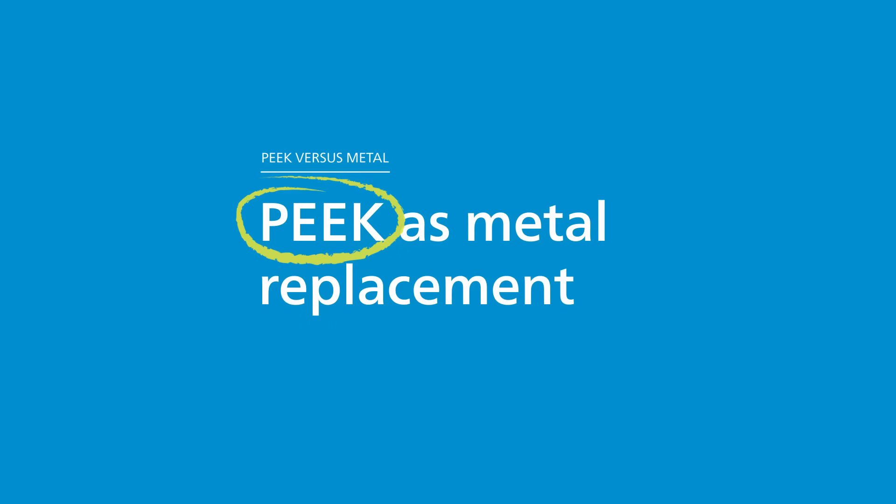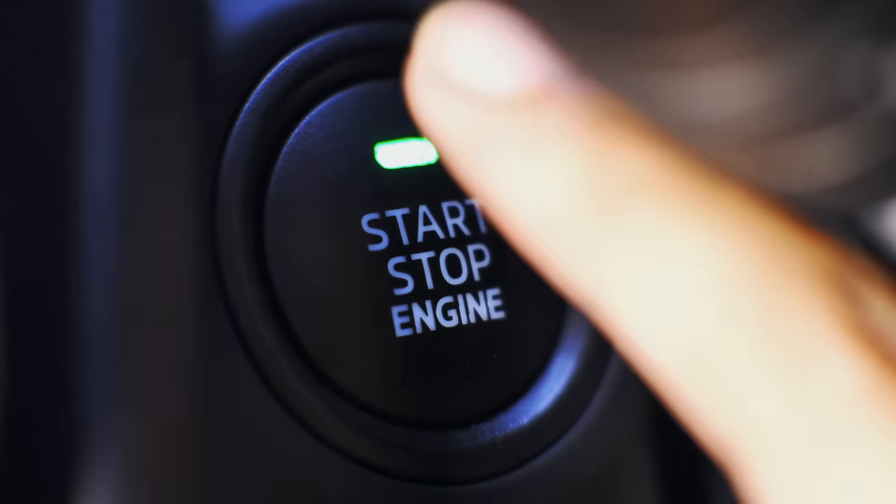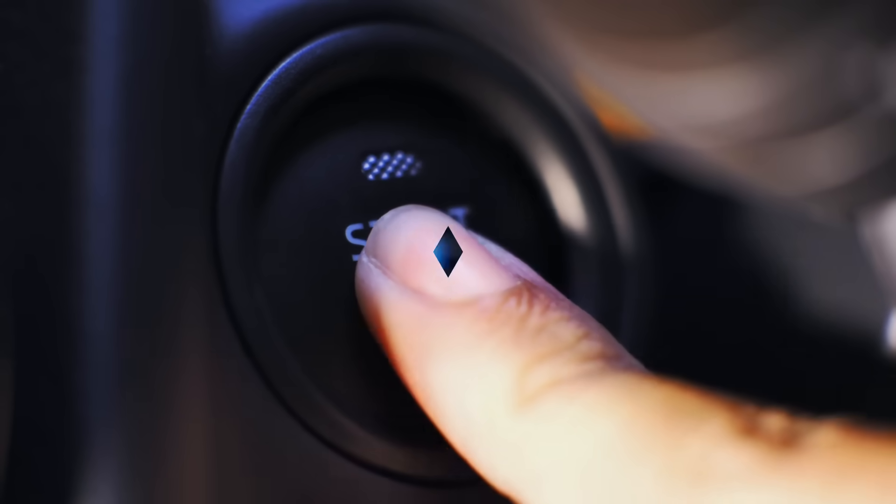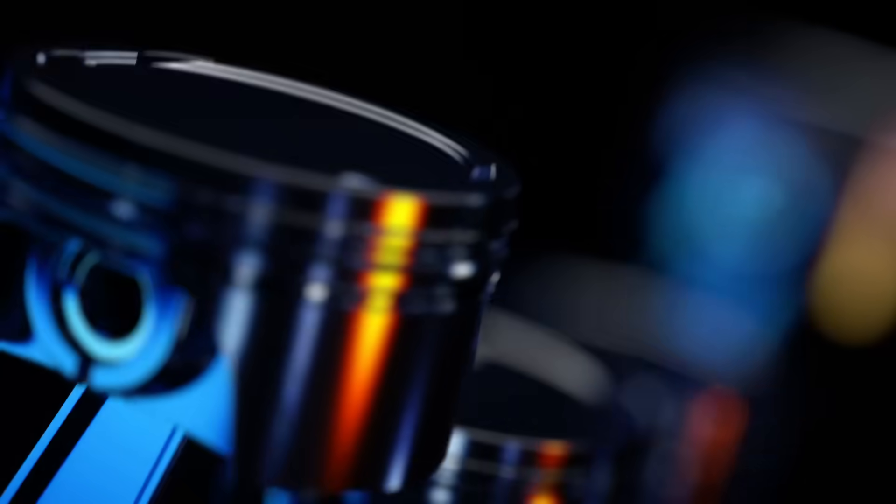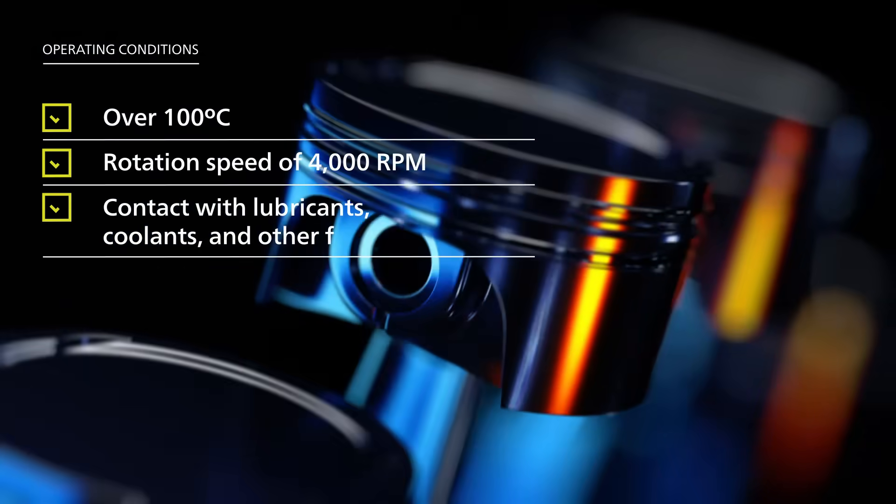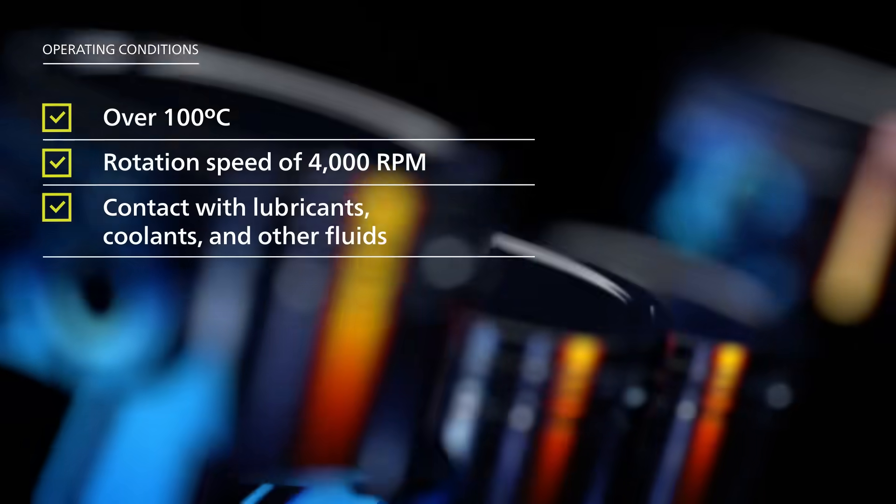So, how does PEEK replace metal in one well-known component, the engine? Let's look at the wear-resistant parts in a car's powertrain, an excellent example of an operating condition with multiple demands.